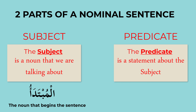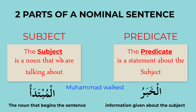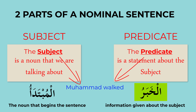What is predicate called in Arabic? Very simple — al-khabaru, or simply Khabar. Khabar means news. So in English we have subject and predicate, but in Arabic we have Mubtada and Khabar. Subject means Mubtada, predicate means Khabar.